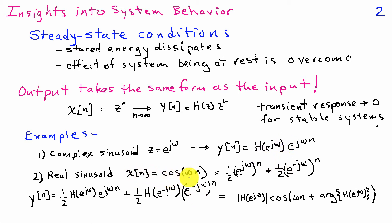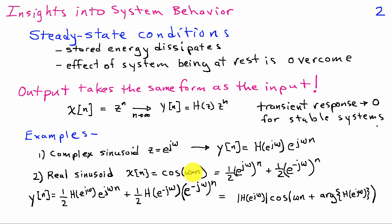If I take a real sinusoid as input, x(n) = cos(ωn), I can write that as one-half e^(jω)^n plus one-half e^(-jω)^n. Since the system is linear, the output is the sum of the outputs due to these individual terms: y(n) = one-half h(e^(jω)) e^(jωn) plus one-half h(e^(-jω)) e^(-jωn). With real coefficients, this simplifies to the magnitude of h(e^(jω)) times cosine of ωn plus the phase of h(e^(jω)).